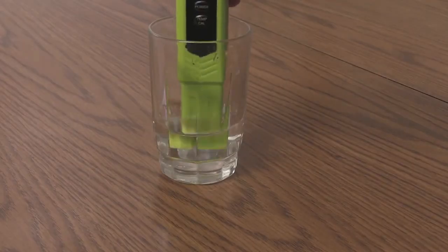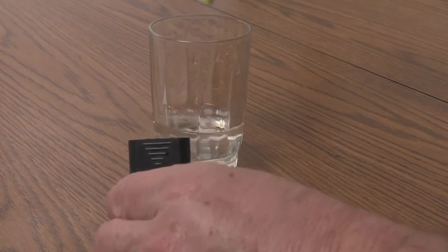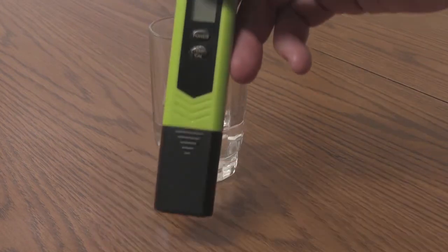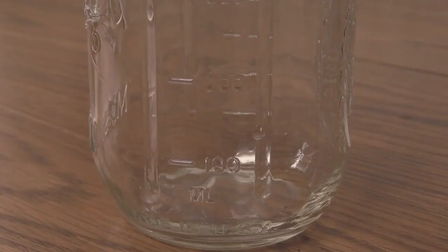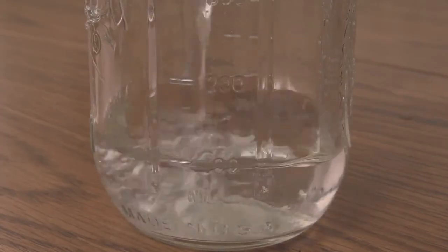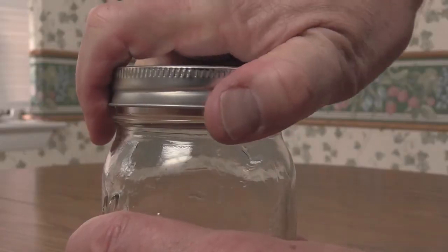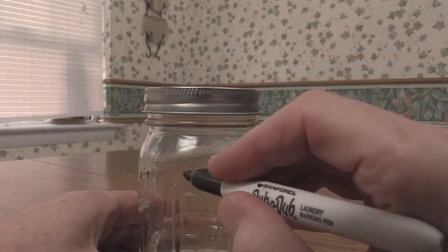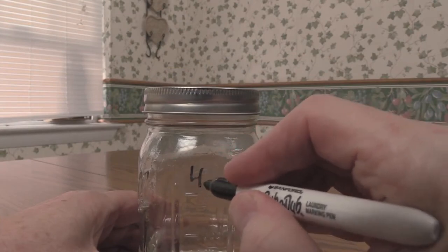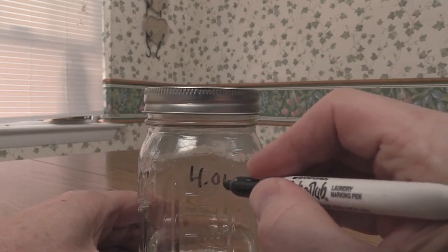Your pH meter should be stored with a few drops of pH 4 buffer solution to keep the probe moist. The pH calibration solutions can be stored in glass containers and reused for several weeks. Label the jars to avoid mix-ups when calibrating later.